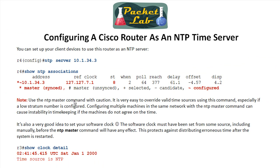Cisco documentation warns directly: don't set a low stratum number on your NTP master, because it can easily override valid time sources. If someone goes in and configures a Cisco device as stratum one, any NTP clients with that in their server list will prefer it — even though the time isn't highly accurate. It's also a good idea to set your software clock with the `clock set` command before making the device an authoritative time server.